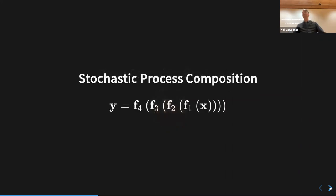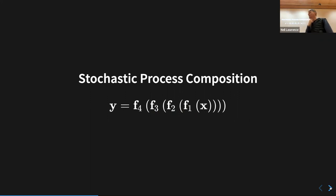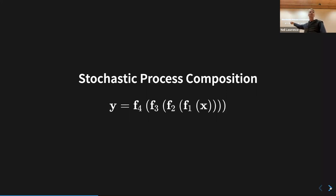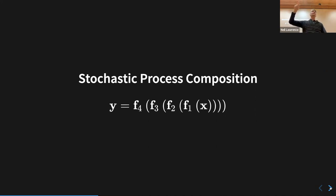Deep Gaussian processes — stochastic process compositions. This is a methodology that goes back as far as there are Gaussian processes. Andreas did it in his thesis; I think we published on this in 2013. A mathematician might look at that and say, well that's just a function — what's the point in process composition? But the point is — and this is what's going on in neural networks as well — you can start with simpler functions and by composing them together you can get much more complex functions, able to introduce more information.